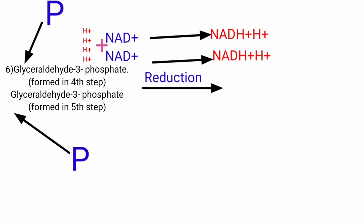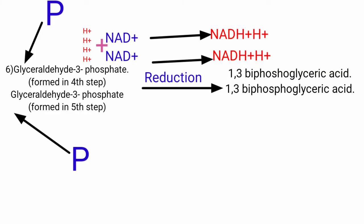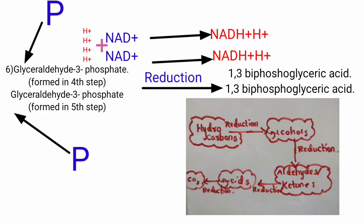Also, each glyceraldehyde-3-phosphate molecule accepts a phosphate group, forming 1,3-bisphosphoglyceric acid. Here, glyceraldehyde (an aldehyde) undergoes reduction to form glyceric acid. The enzyme used in this step is dehydrogenase, because hydrogen is removed in this step.